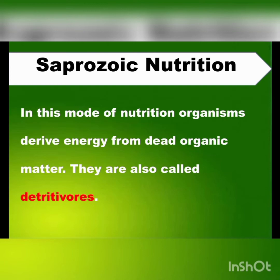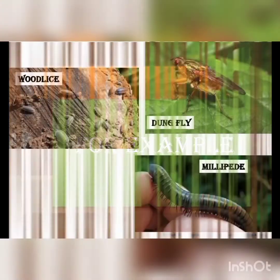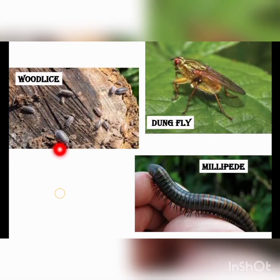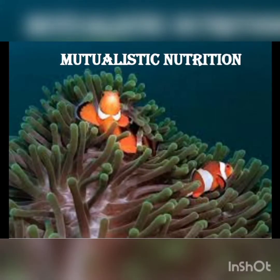Dead organic matter — the animals die. For example, which animals do we have? Wood lice, dung flies, millipedes. These are examples of Saprotrophic organisms that feed on dead organic matter.